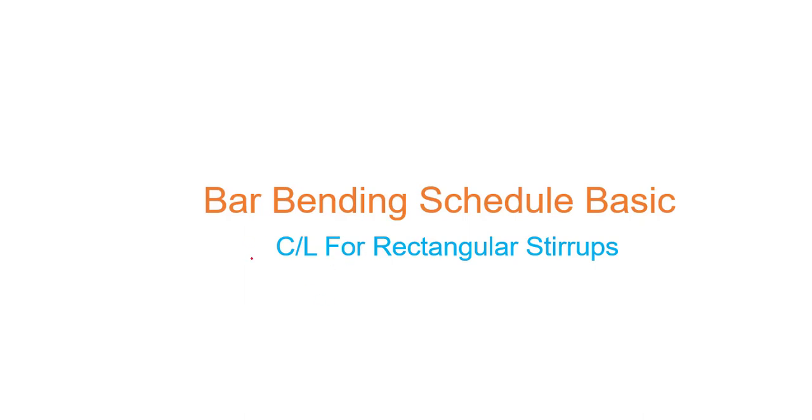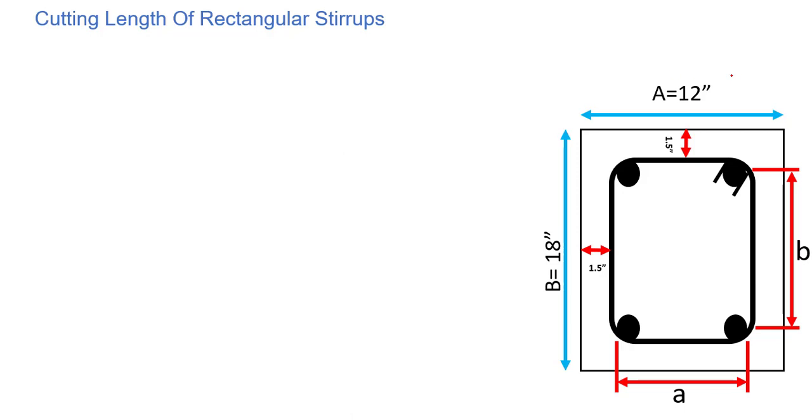Hello, in this tutorial we are going to find out the cut length of rectangular stirrups. Let's get started. Here you can see the cross section of our column, or it could be a beam as well. It is 18 inches by 12 inches.